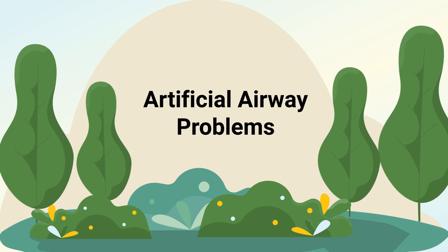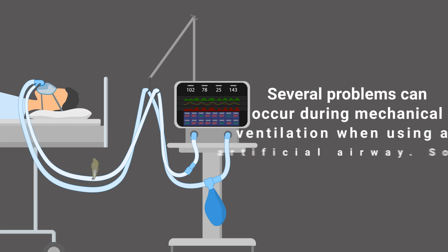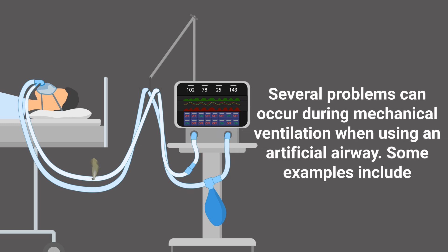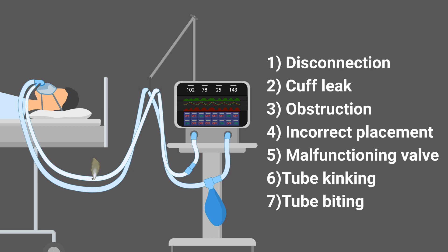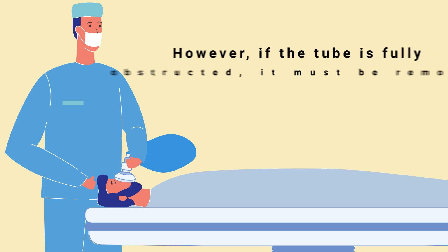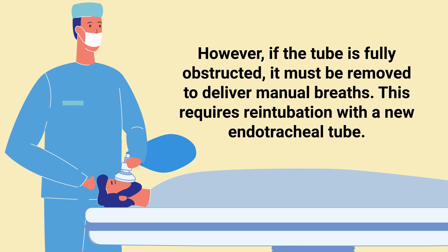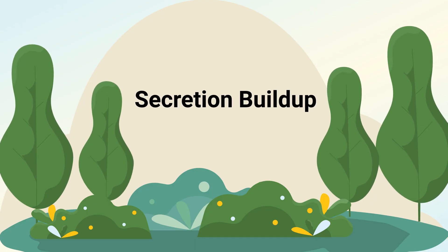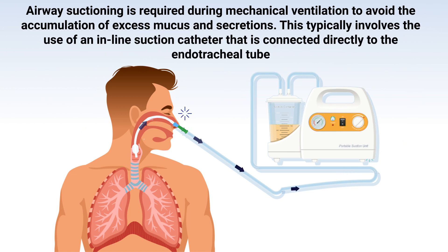Next on the list is artificial airway problems. Several problems can occur during mechanical ventilation when using an artificial airway. Some examples include disconnection, cuff leak, obstruction, incorrect placement, a malfunctioning valve, tube kinking, and tube biting by the patient. If a severe problem arises with an artificial airway, the patient should be disconnected and manually ventilated with a bag-valve mask. However, if the tube is fully obstructed it must be removed to deliver manual breaths, which requires re-intubation with a new endotracheal tube.